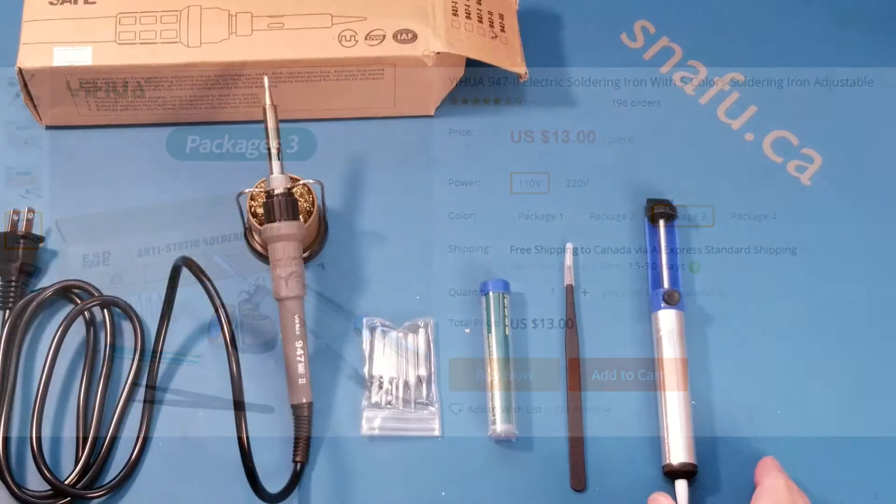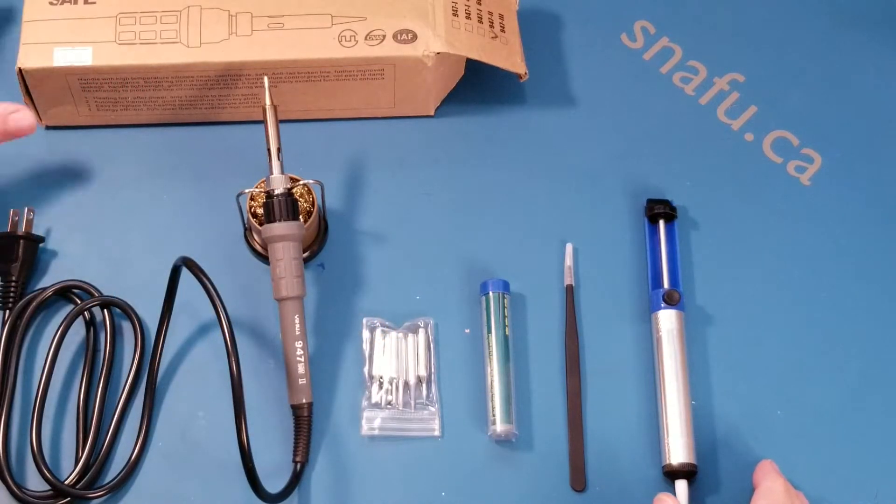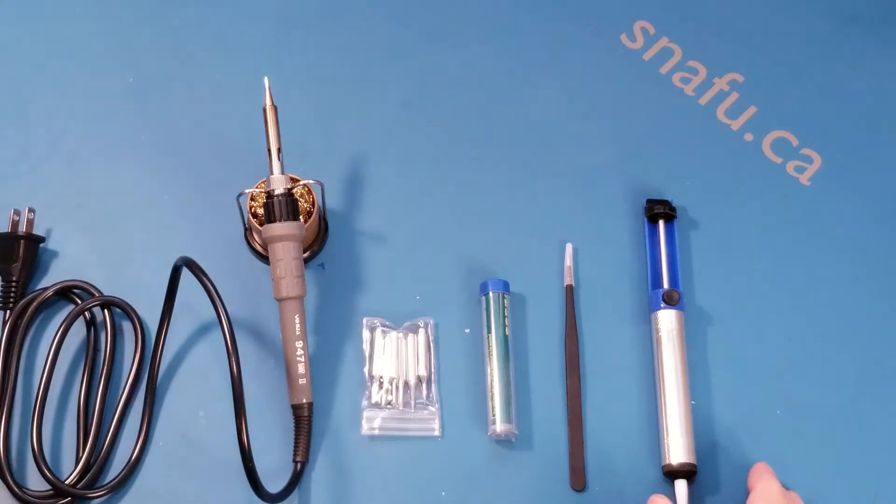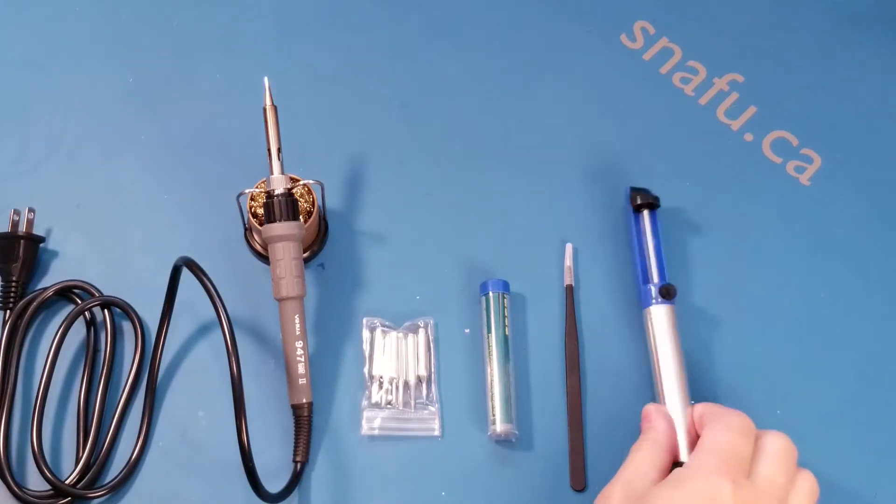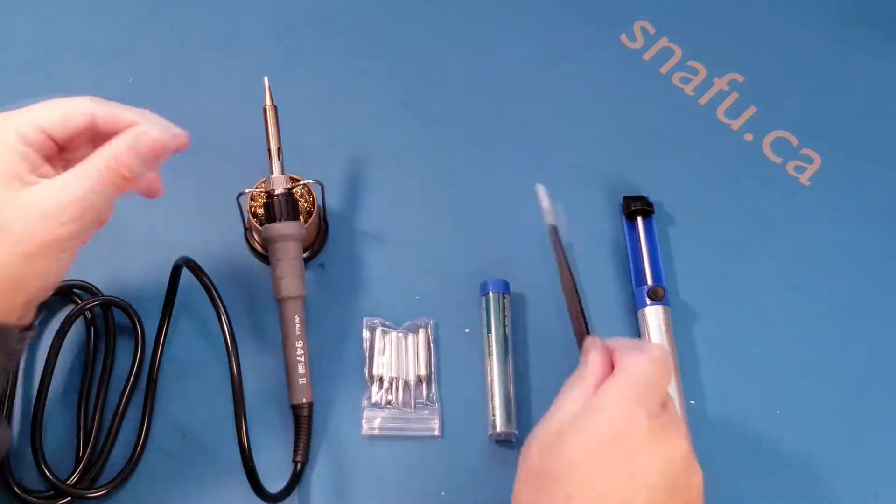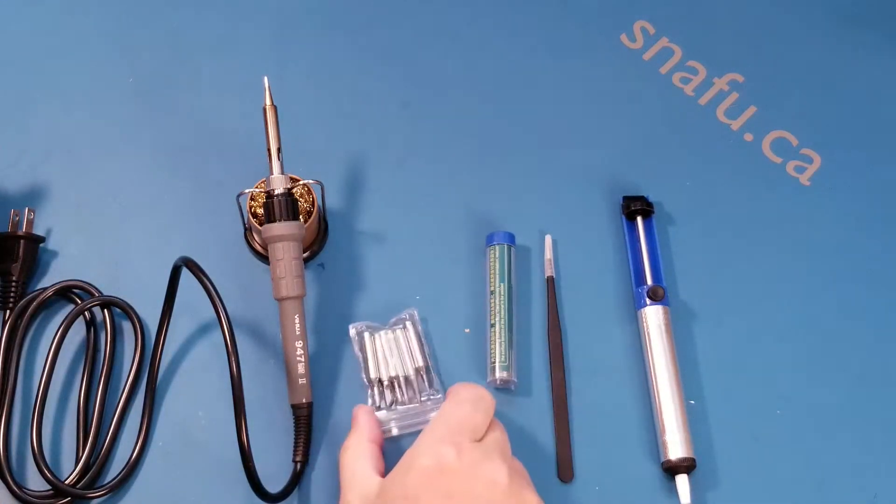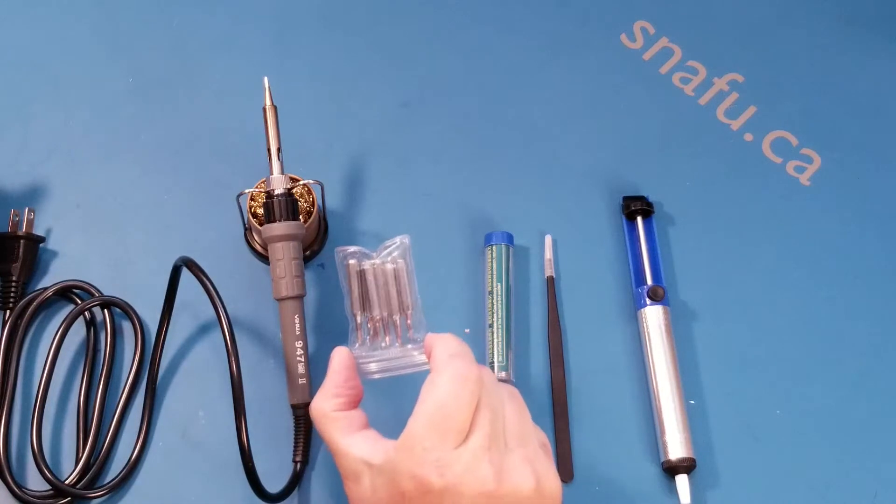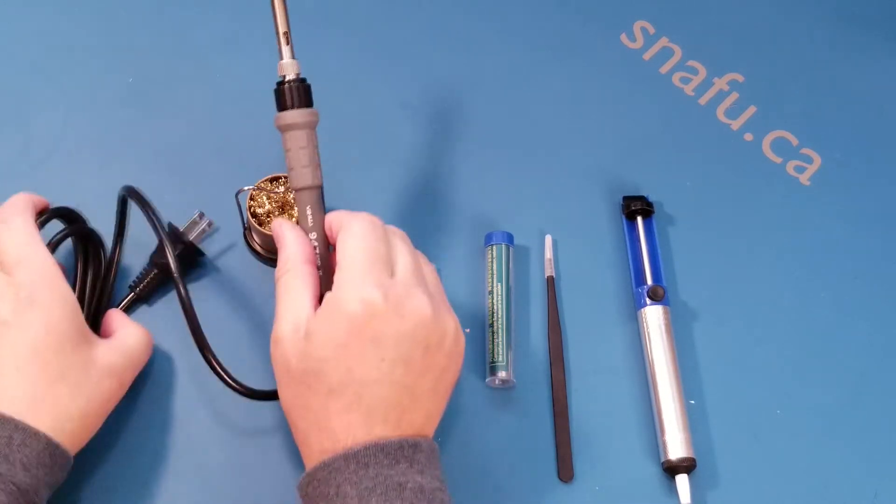At the bottom end, this is what $13 buys you. Everything came in this little box. We have a solder sucker, a set of tweezers, some inexpensive solder, some spare tips of various types, chisel, point, and the iron itself.